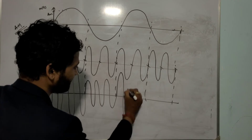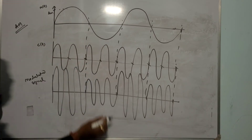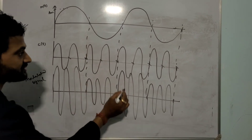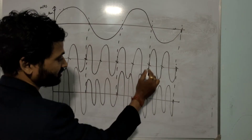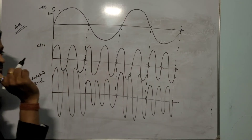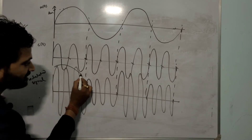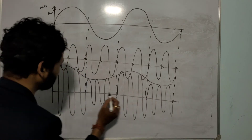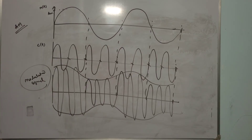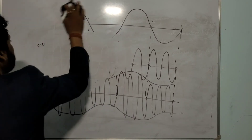The process continues: during the positive value of the message signal, amplitude will be high; during the negative value, amplitude will be less. The frequency remains the same. Since the topic is amplitude modulation, the amplitude has to be modulated. The result — the nature of the modulated signal — is as shown. The amplitude changes as per the message signal while frequency stays constant as the carrier signal frequency.